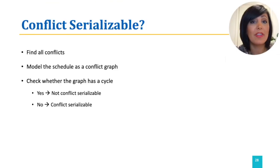Following from the theorem, we find all conflicts. We model the schedule as a conflict graph using them, then we check whether the graph has cycles. If it has, it is not conflict serializable. And if it does not, it is conflict serializable.